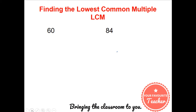So we're going to use in our example the numbers 60 and 84. So what is the lowest common multiple of 60 and 84? To do that we start by first finding the prime factors of 60 and 84, and those are the prime factors which you can verify.